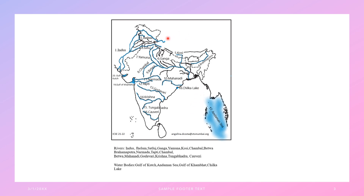To summarize the rivers: Indus, Jhelum, Satluj, Yamuna, Ganga, Chambal, Betwa, Kosi, Brahmaputra, Mahanadi, Godavari, Krishna, Tungabhadra, Kaveri, Narmada, and Tapi. These are all the rivers you need to mark.